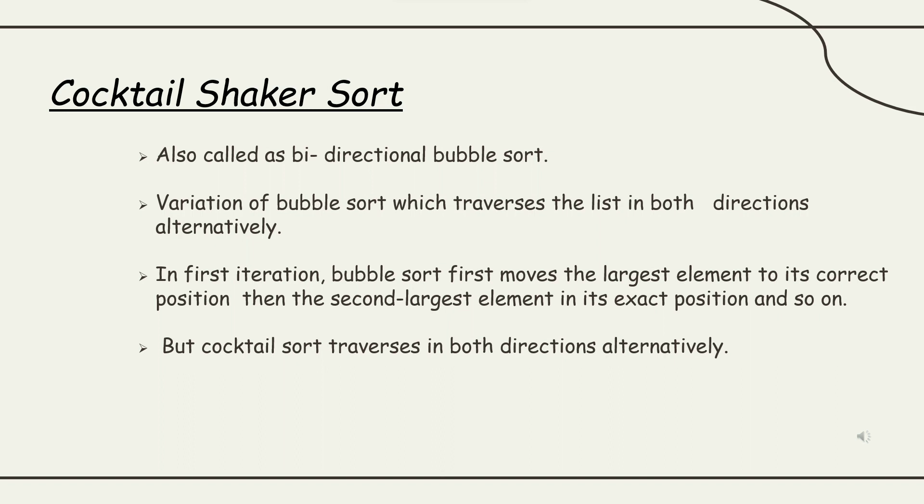What is Cocktail Sort? Cocktail Sort is the variation of Bubble Sort, which traverses the list in both directions alternately. Cocktail Sort is similar to Bubble Sort, but the difference is that Cocktail has a backward pass. Cocktail Sort is also called Bidirectional Bubble Sort.